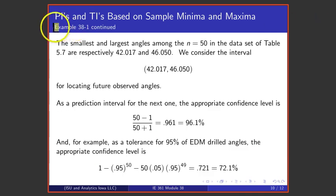If you go back again to this set of data from table 5.7, the smallest and largest numbers in the data set are these two. And that interval might be used either as a prediction interval for one more hole angle or as an interval trying to capture some fraction of all angles produced by the process. Used as a prediction interval, the confidence level is 96.1%. Used as a tolerance interval for, say, 95% of the angles, this calculation ultimately gives me a 72.1% confidence level for this interval used as a tolerance interval.